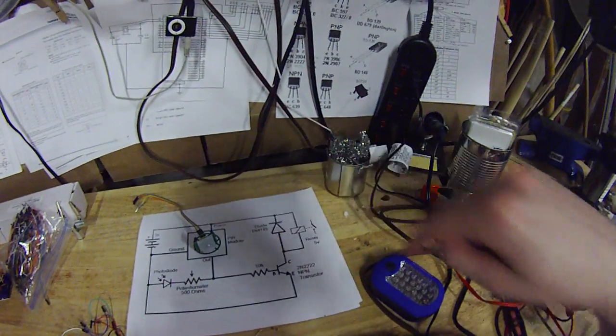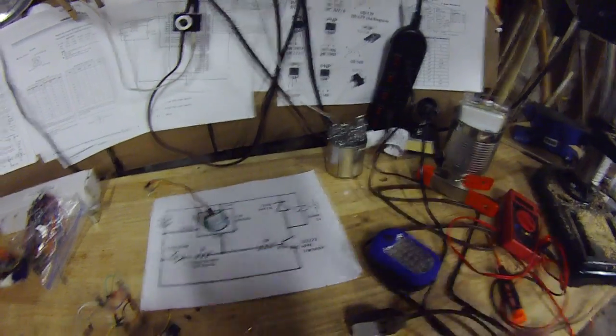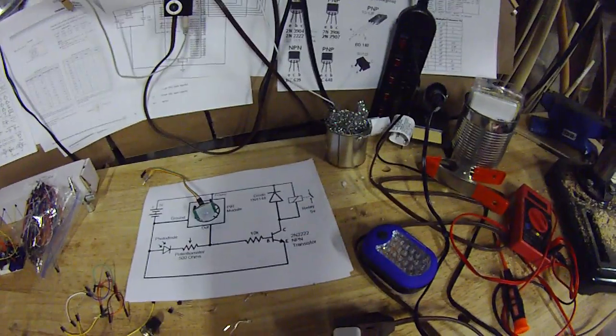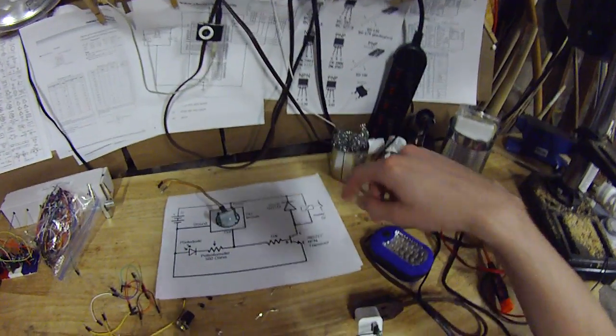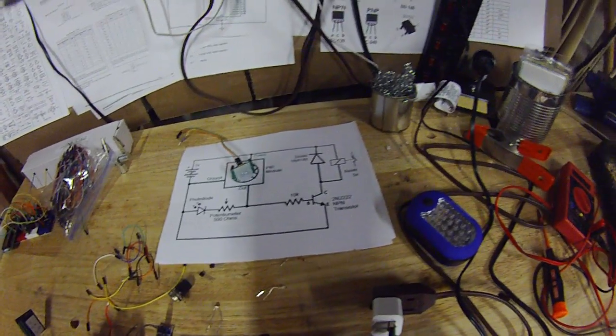And so this is the non-module version. So that diode there acts as a snubber to burn up the voltage spike. So if you do have a module don't worry about the diode.